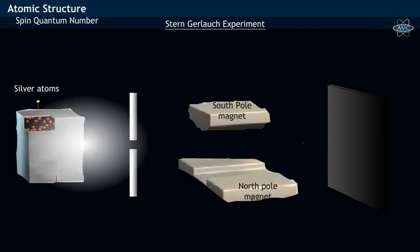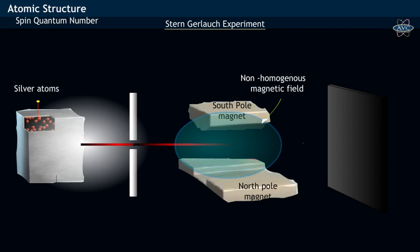In Stern experiment, a thin beam of silver atom is made to pass through a slit and enter into a non-homogeneous magnetic field. The electron with magnetic momentum either upward or downwards or even random direction passes through the non-homogeneous magnetic field.